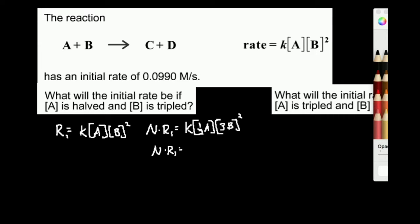So n times rate 1 is equal to k times — I can pull all of these numbers out if I remember to apply the exponents to them. This becomes 1/2 times 3-squared, which is 9, times the concentration of A times the concentration of B squared. I distributed each exponent: 1/2 stays as-is (first power), but 3 is squared along with B, so 3B squared is the same as 9 times B squared.